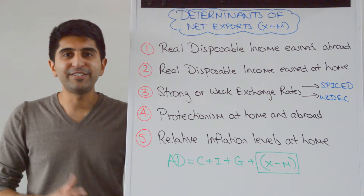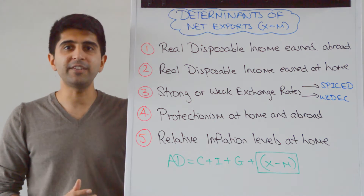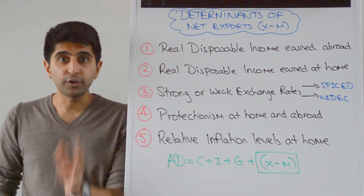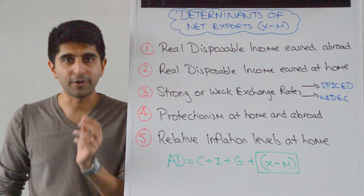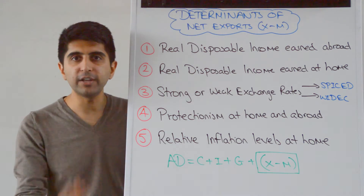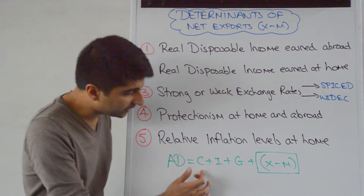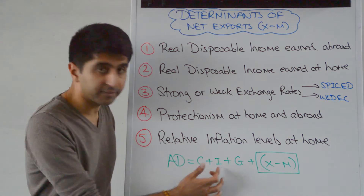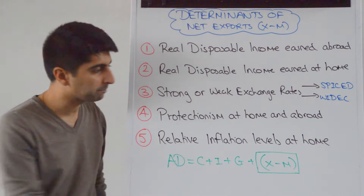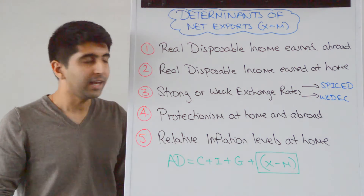Hi everybody, let's continue by looking at factors that can shift the aggregate demand curve, focusing this time on net exports. Remember the equation for aggregate demand, which is C, consumption plus I, investment plus G, government spending, plus X minus M, which is net exports.